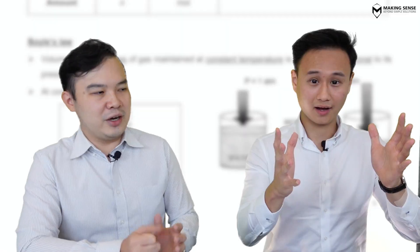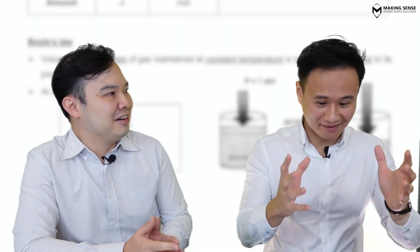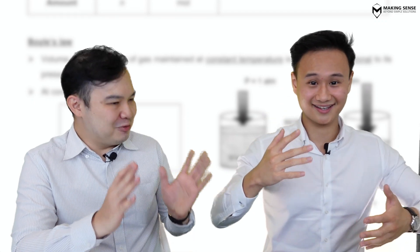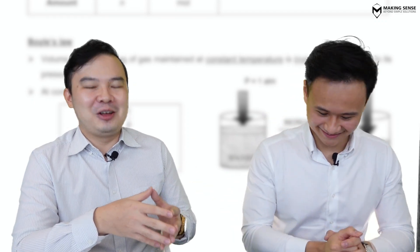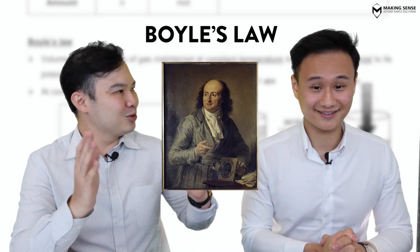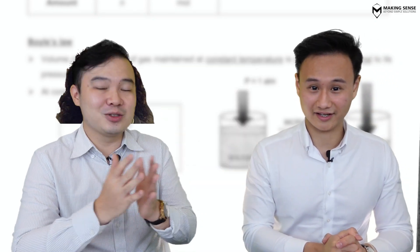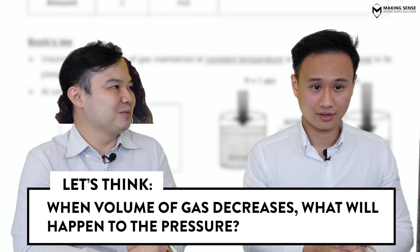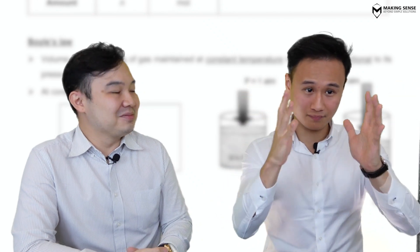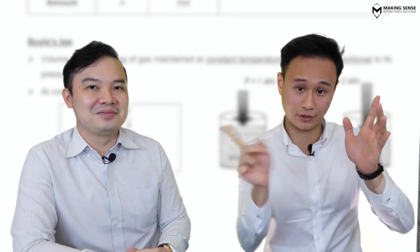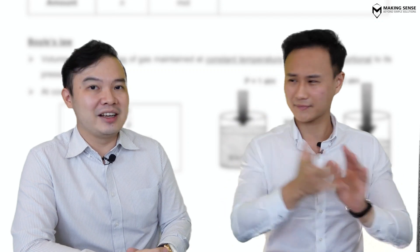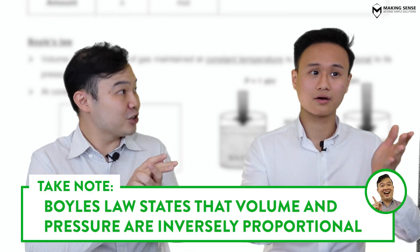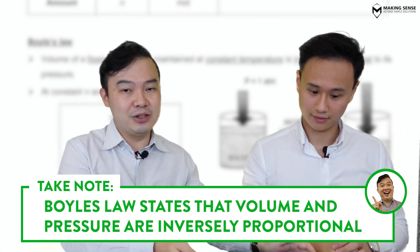Mr Tim, what are you doing? I'm trying to see how volume affects pressure. Okay, just like compressing a balloon — the volume decreases. Can you tell me what happens to the pressure of the gas inside the balloon? If I decrease the volume, the gas particles will hit the walls more frequently, so my pressure should go up. That's right — volume and pressure are inversely proportional.